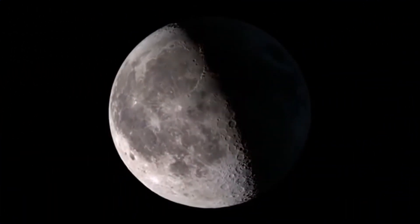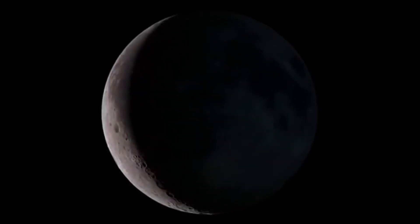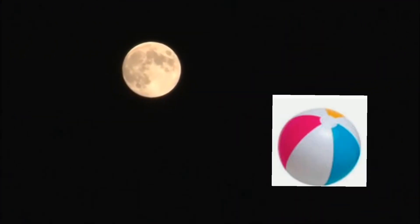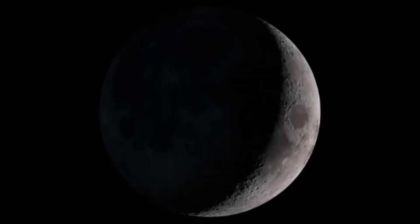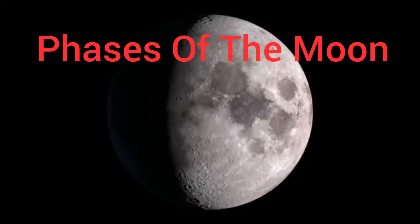Do you realize that the size of the moon changes from time to time? Sometimes it looks like a banana, but sometimes it looks like a ball. The different shapes of the moon is known as phases of the moon.